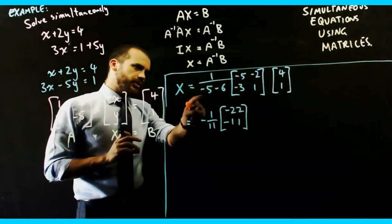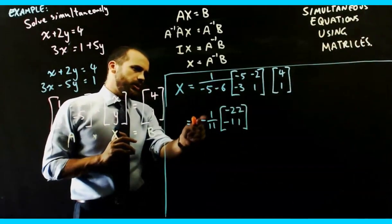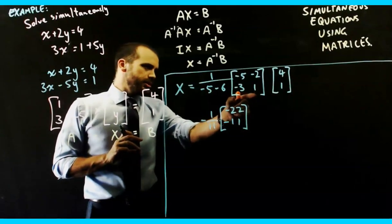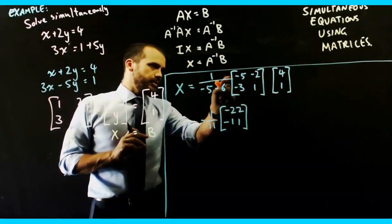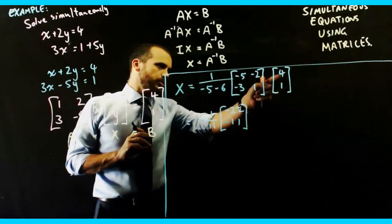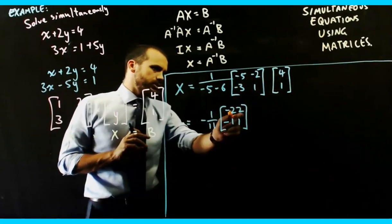So, 1 over negative 5 minus 6 is the same as negative 1 over 11. And then multiplying this matrix by this matrix is negative 5 times 4 plus negative 2 times 1, which is negative 22.